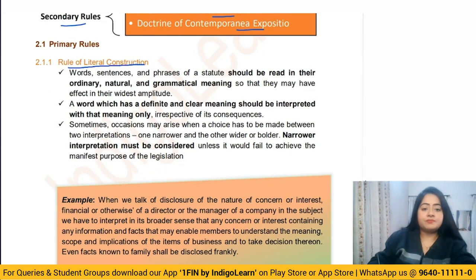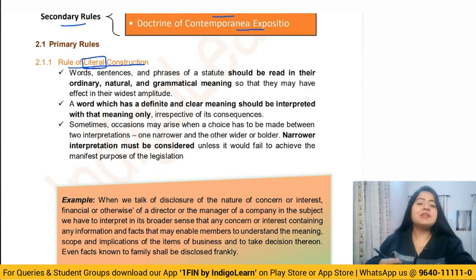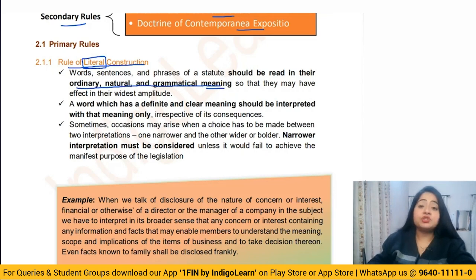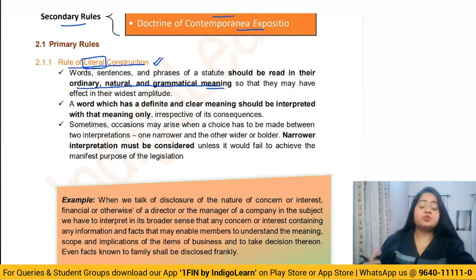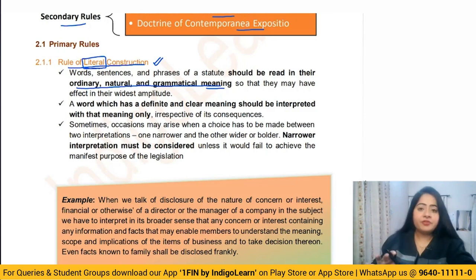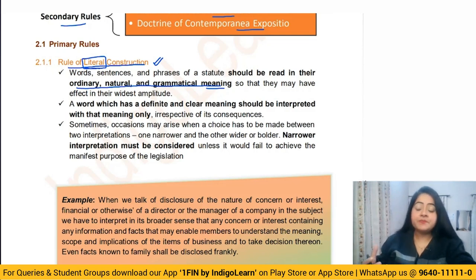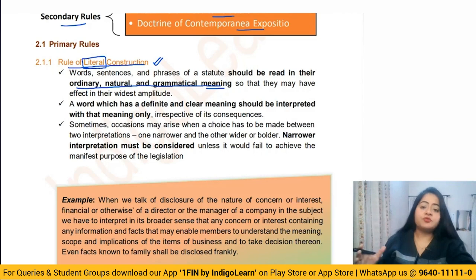The first rule is the rule of literal construction. Literal construction means you simply read the statute and interpret it. You focus on the ordinary, natural, and grammatical meaning of the language used in the statute. You do not go beyond those words. This is the first rule we always try to apply. If from a plain reading you can understand the meaning and the provision, you don't have to go beyond that.